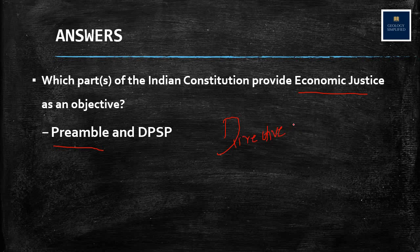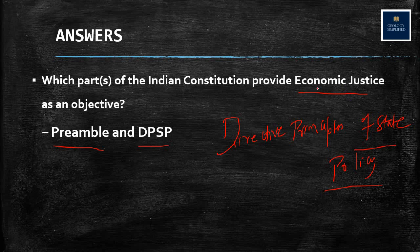Directive Principles of State Policy are the guiding principles given to the state — ideal principles which could not be included in the fundamental rights because fundamental rights are justiciable. That is, you can go to court if they are violated. But DPSPs are not justiciable; they are principles the state should adhere to while framing policies. Economic justice is present under the Preamble as well as DPSP, whereas fundamental rights cover political justice. Political, social, and economic justice are covered by DPSPs.